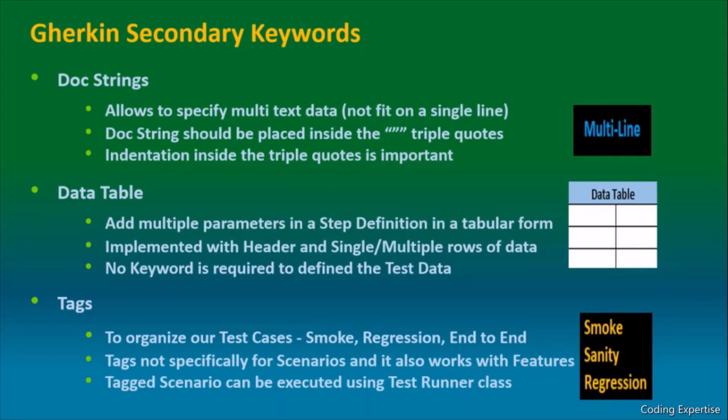Let's get into tags. Tags are helping us to organize our test cases. It could be anything: smoke test cases, regression, or end-to-end testing test cases. Whichever test cases we want to trigger happens based on the tags that are defined inside test runner. And it is not specifically for scenarios, it also works with features.